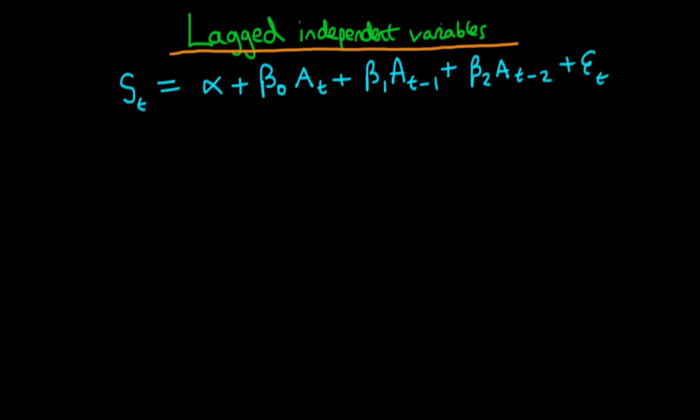So this is a model which is slightly different to models which we've seen before because we haven't just got unique independent variables, we've got lagged values of a given independent variable in our model. So what do these individual coefficients on these lagged values of the advertising variable actually mean?